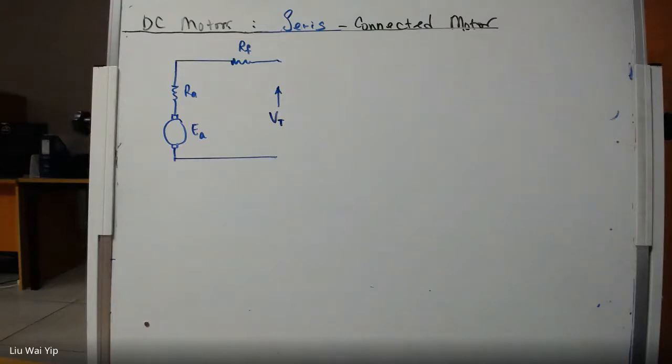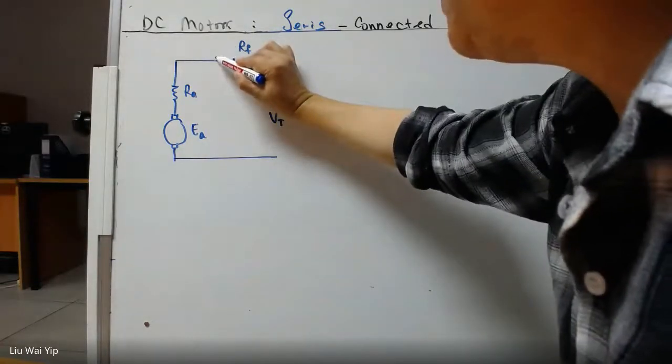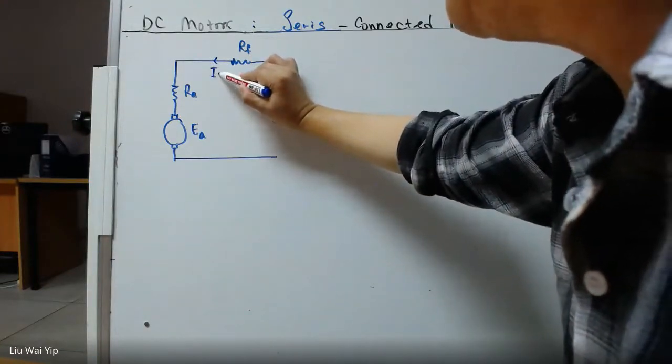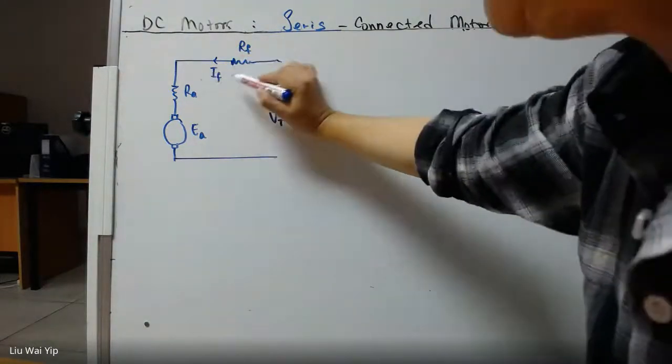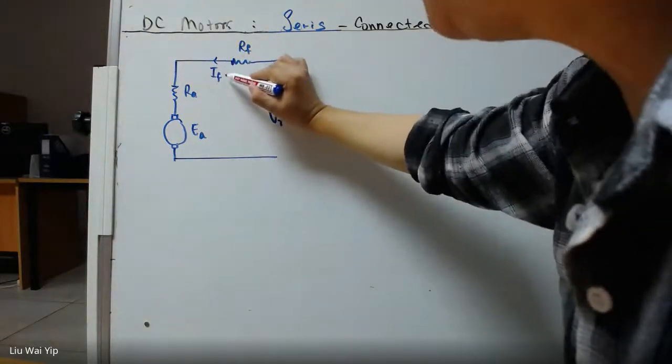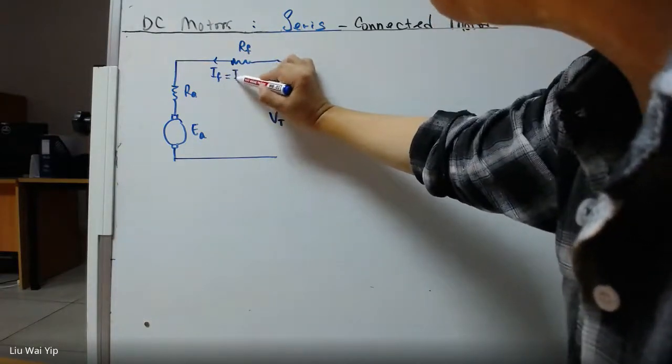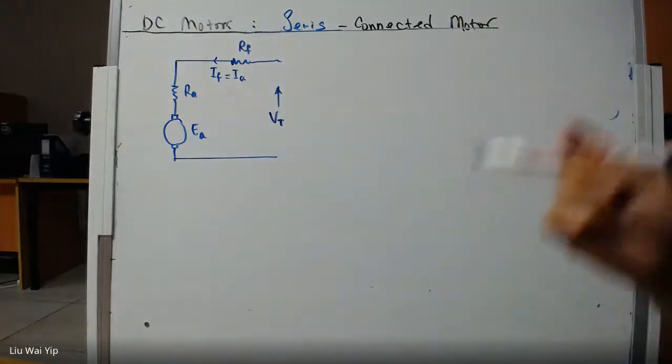In a series connected motor, the current here is the field current, and this field current will be shared equally with the armature. So IF here will be equal to IA.